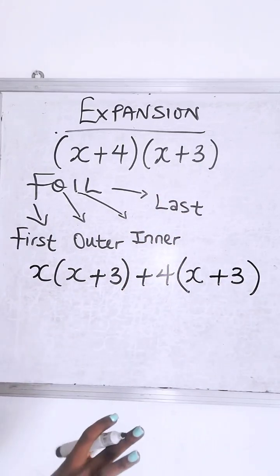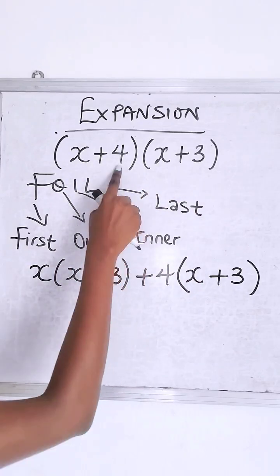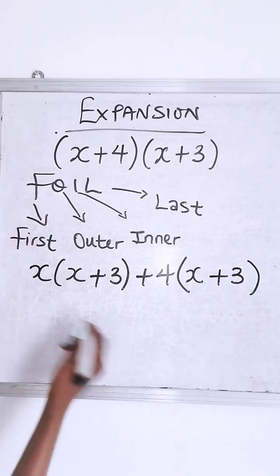I hope that made sense, right? So you pick this first term, multiply the second bracket, pick the second term, multiply the same second bracket.